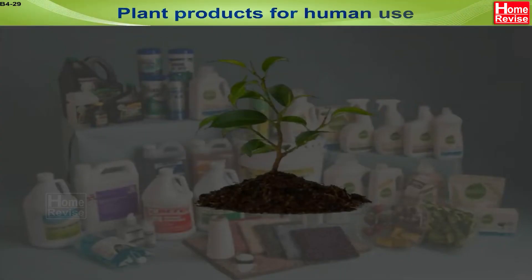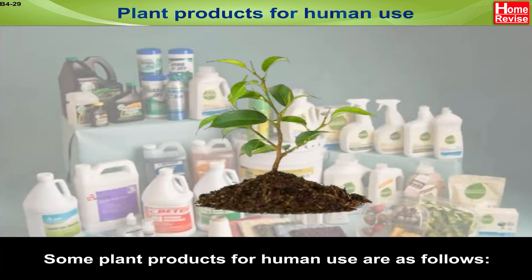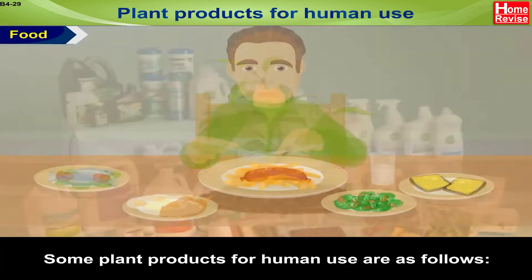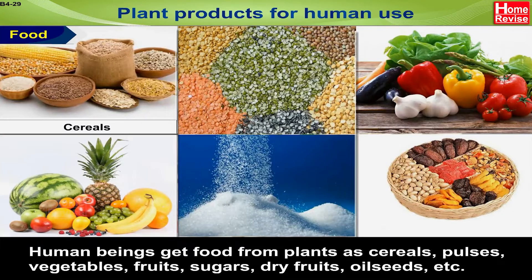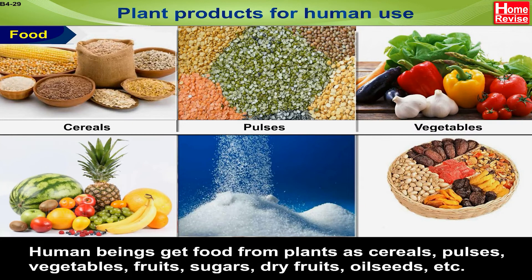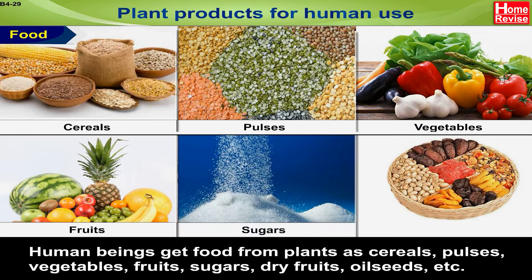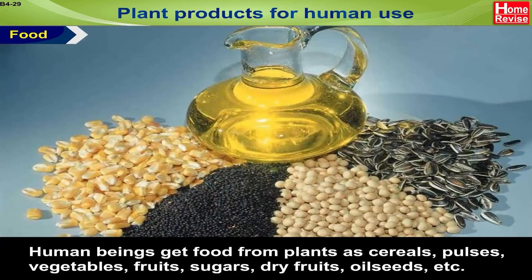Plant Products for Human Use. Some plant products for human use are as follows. Food: Human beings get food from plants as Cereals, Pulses, Vegetables, Fruits, Sugars, Dry Fruits, Oil Seeds, etc.